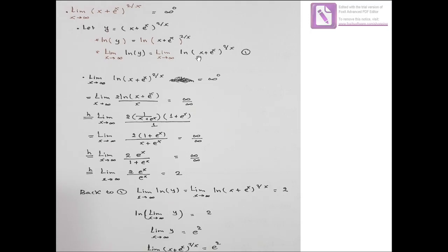Going back and replacing this part by 2: limit of ln(y) as x→∞ = 2. Rewriting: ln(limit of y as x→∞) = 2. Applying e to both sides, e and ln cancel, giving limit of y as x→∞ = e². Since y = (x + e^x)^(2/x) from the beginning, we get: limit of (x + e^x)^(2/x) as x→∞ = e².